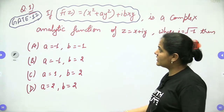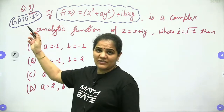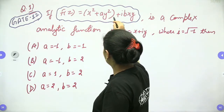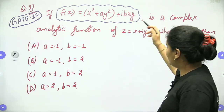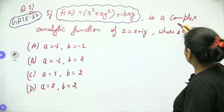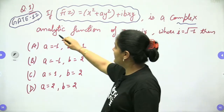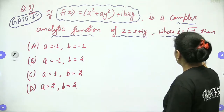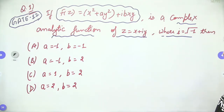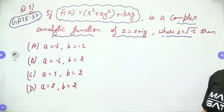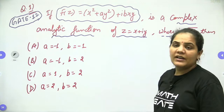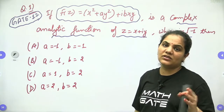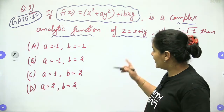This is a question which has been asked in GATE 2017. The question is: if f(z) equals x² + ay² + i·bxy is a complex analytic function of z equals x + iy, where i equals root of minus 1, then we have to find the value of a and b.